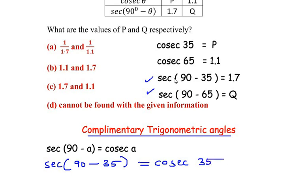Since we know that sec of 90 minus 35 is 1.7, we will just substitute here in its place. So this will be equal to cosec of 35. Let us see if that is the value we had to find. Cosec of 35 was P, so we got the value of P as 1.7.